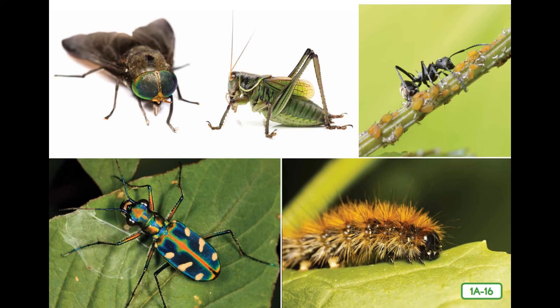Flies, grasshoppers, ants, caterpillars, beetles — these are all insects, yet they look quite different from one another: different shapes, sizes, and colors. So what makes an insect an insect? You'll find out next time. In the meantime, be thinking about how a fly is like a grasshopper, or how a beetle is like an ant.